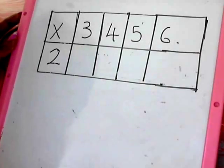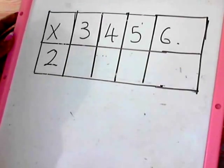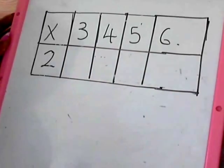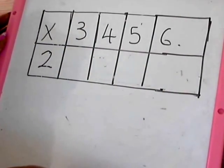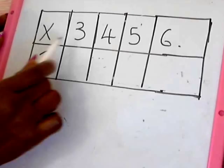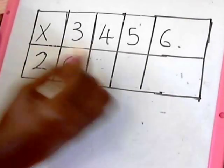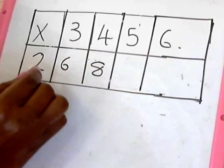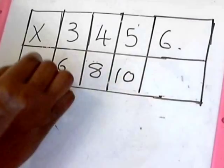Hello, I want to show you how to solve grid multiplication problems. Here we have two rows, so we go: 2 times 3, that's 6; 2 times 4, that gives us 8; 2 times 5, that gives us 10.